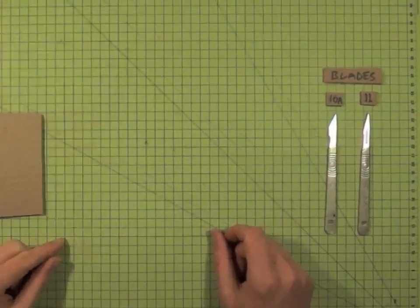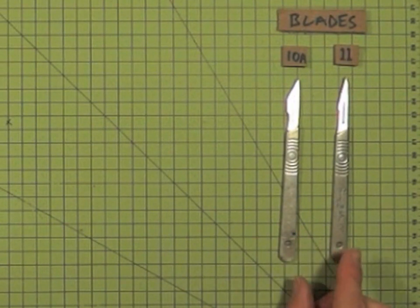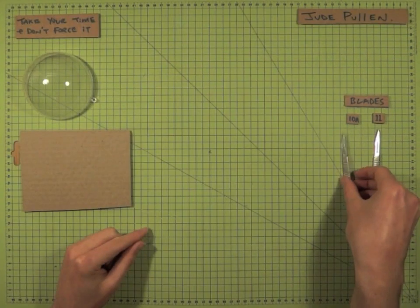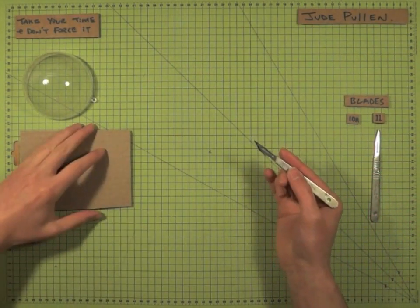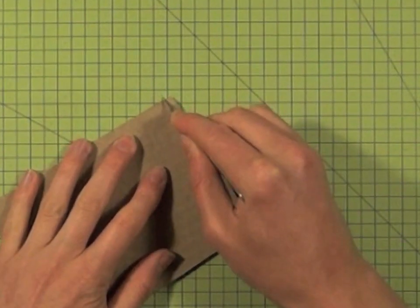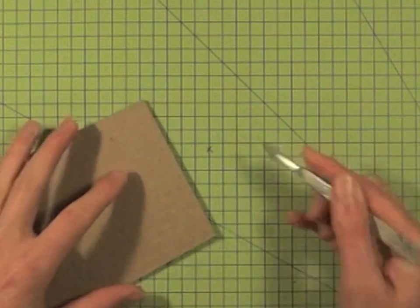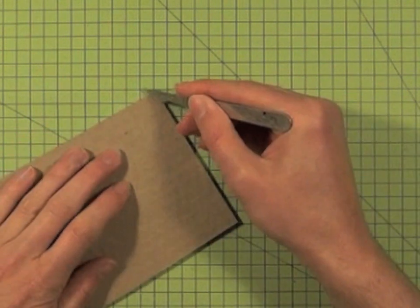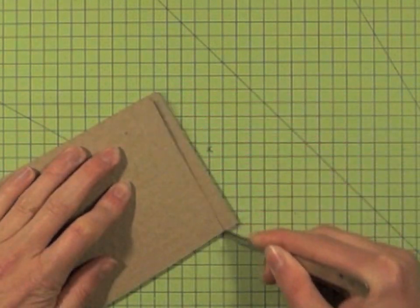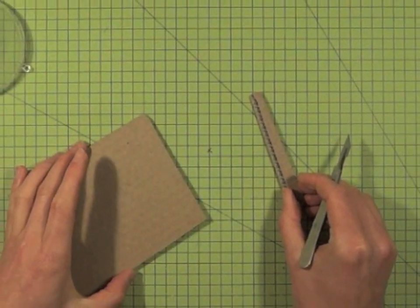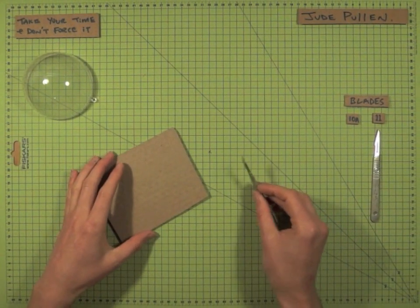A little bit of advice on using the 10A and the 11 blades on the scalpels. The 10A is pretty good and pretty sturdy for just doing straight cuts and you can apply quite a reasonable amount of force. You can even do some slightly angled cuts quite safely without applying too much pressure.